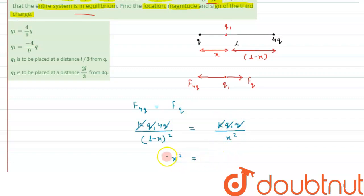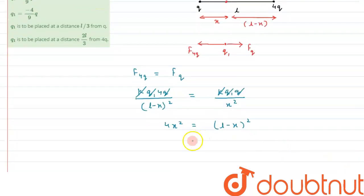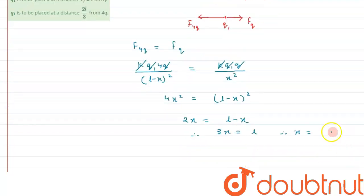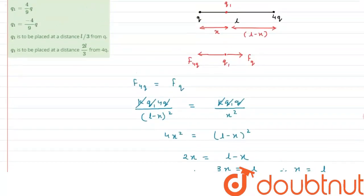This gives us 4x² equals (l − x)². Taking the square root, we get 2x equals l − x, therefore 3x equals l, so the value of x is l/3.